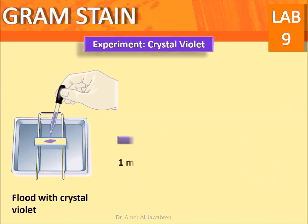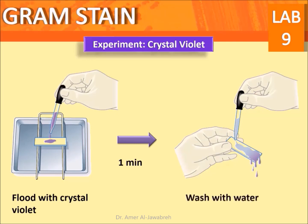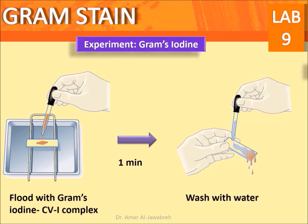Procedure: Flood with crystal violet and wait for one minute, then wash with water. Flood with Gram's iodine — a crystal violet-iodine complex will form. Wait for one minute, then wash with water.